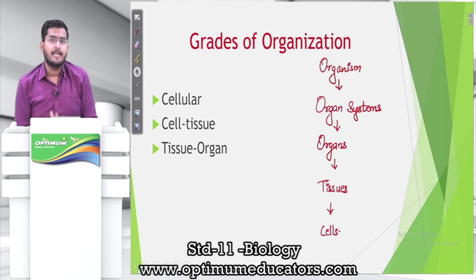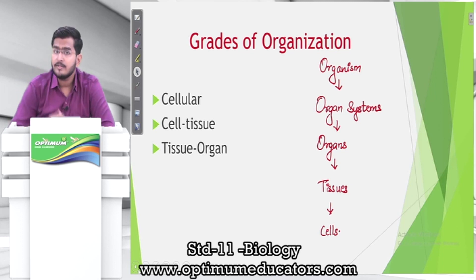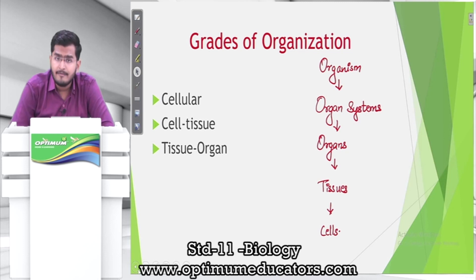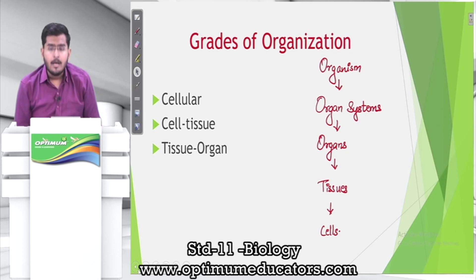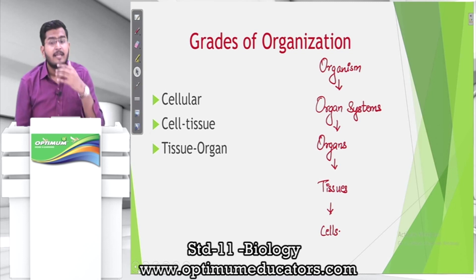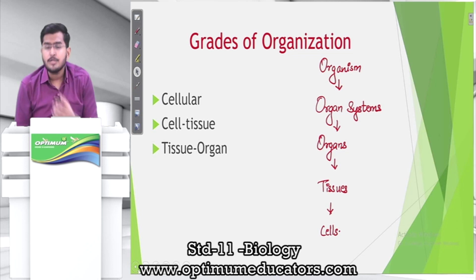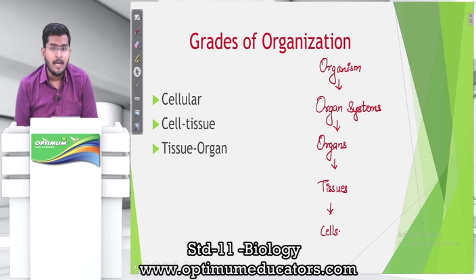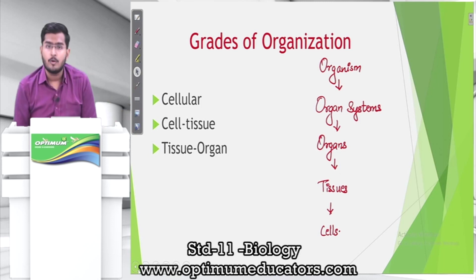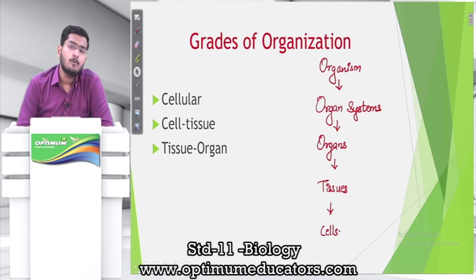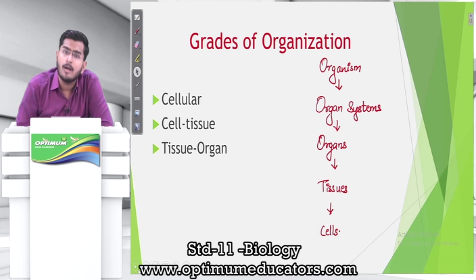For example, the human respiratory system includes the nostril, nasal cavity, pharynx, larynx, trachea, lungs, alveoli, and bronchi — all making up the respiratory system, composed of tissues made of cells. In some organisms you find only cells — cellular level of organization. In some you have cells and tissues — tissue level organization. In some you have tissues and organs — organ level organization. Kingdom Animalia includes organisms of all three categories.